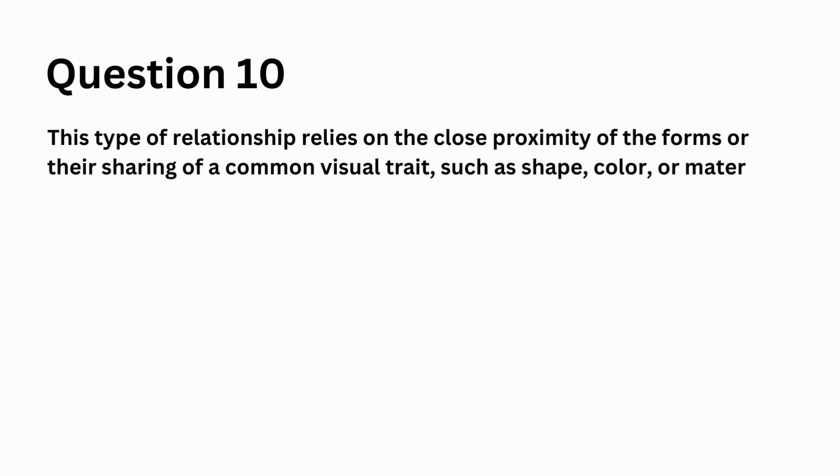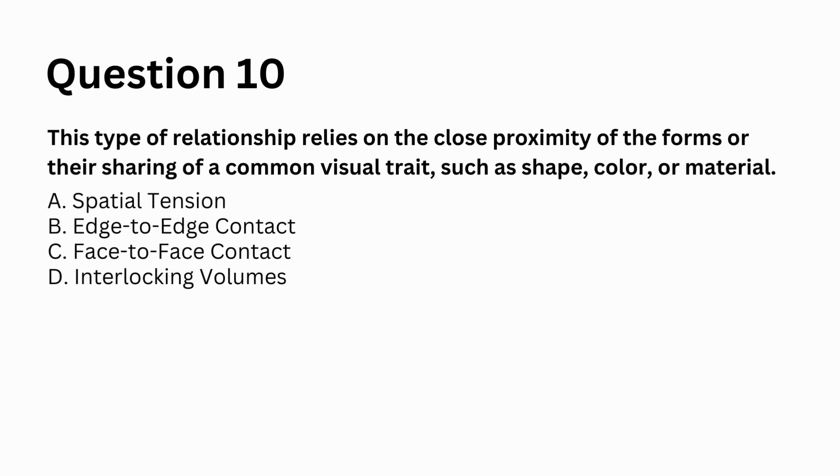This type of relationship relies on the close proximity of the forms or their sharing of a common visual trait such as shape, color, or material. A. spatial tension, B. edge-to-edge contact, C. face-to-face contact, D. interlocking volumes. Answer: A. spatial tension.